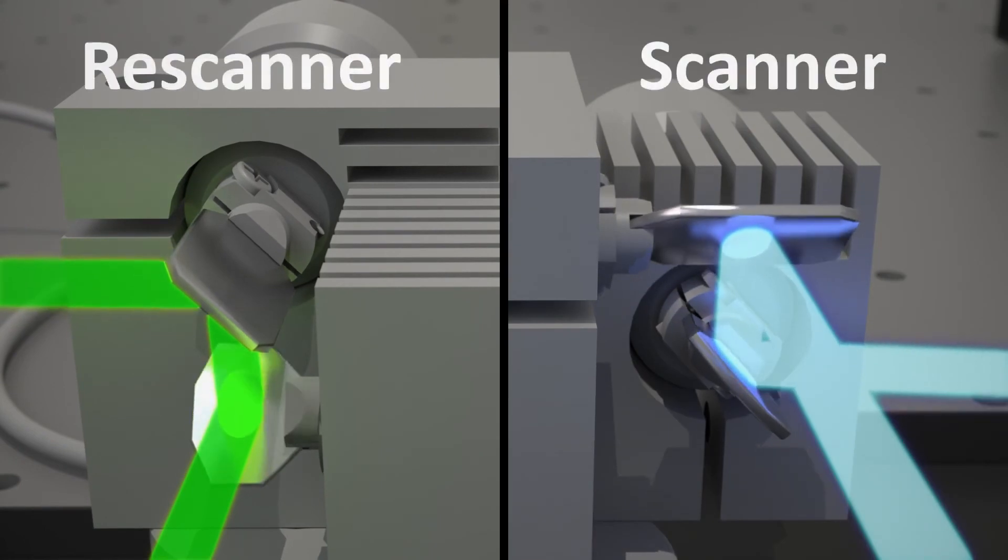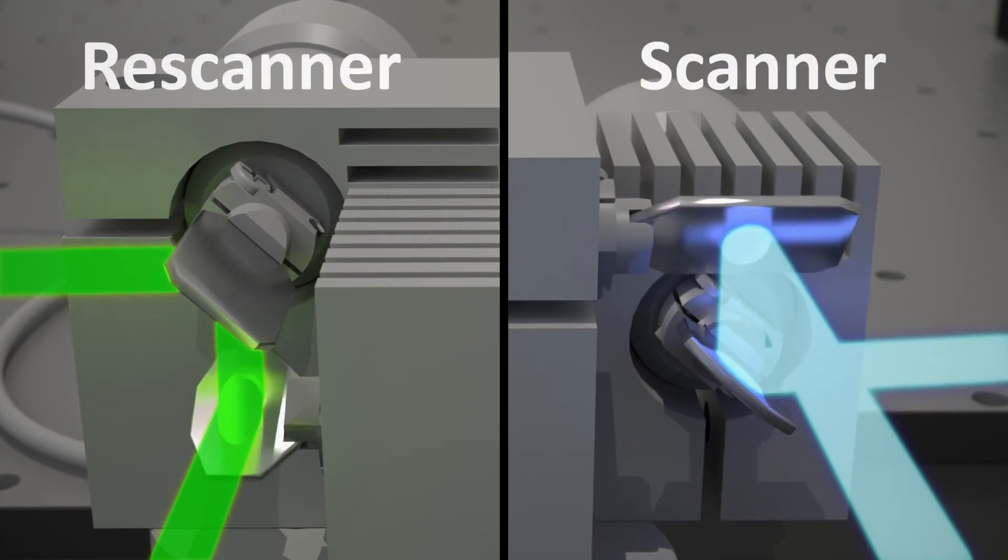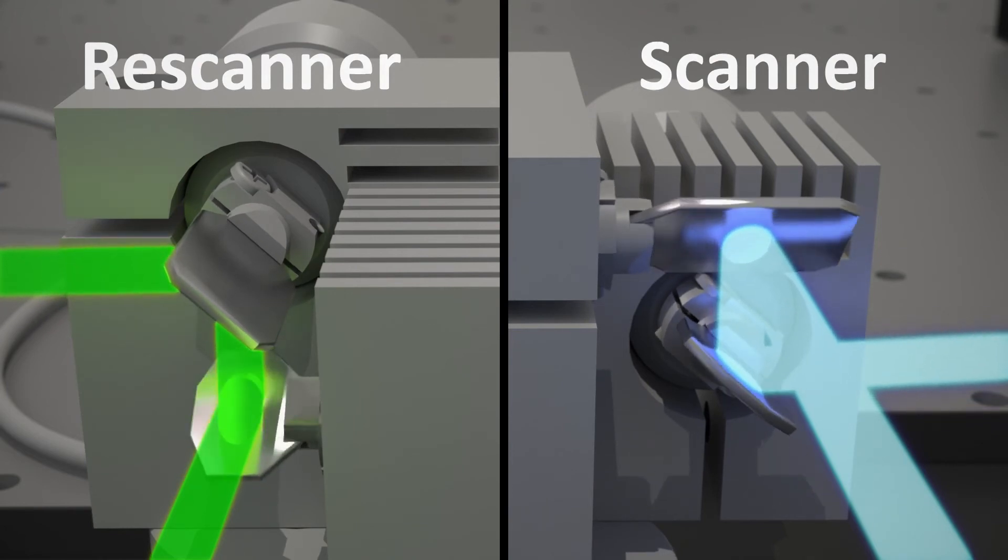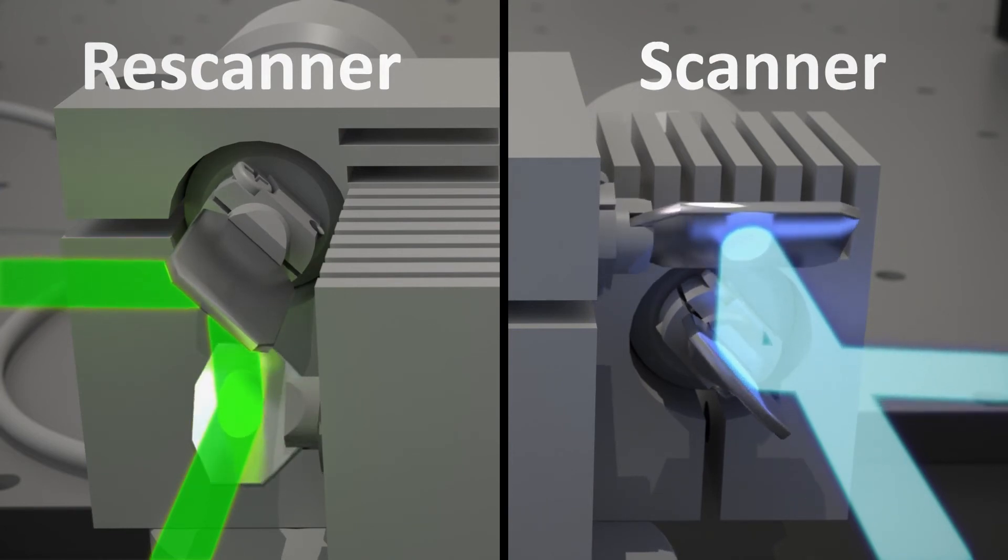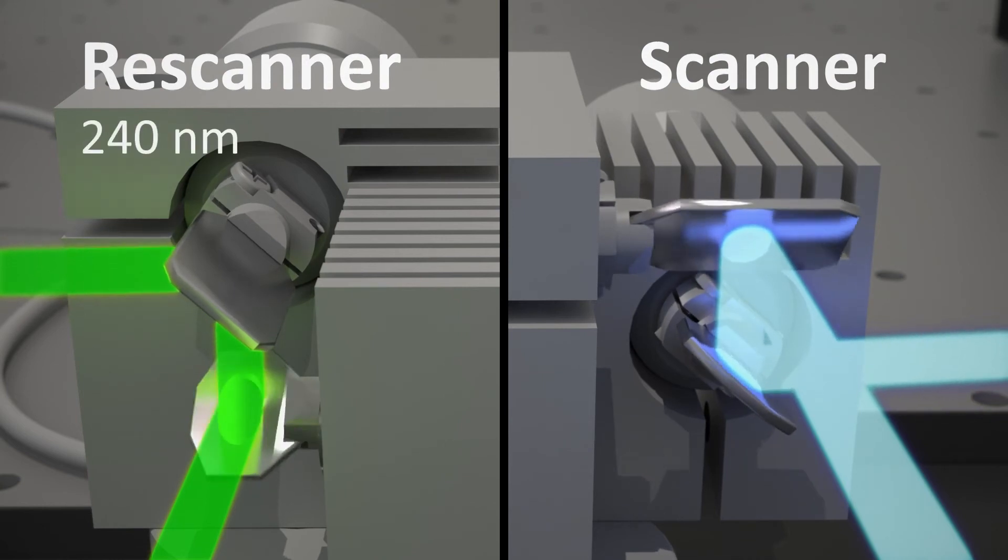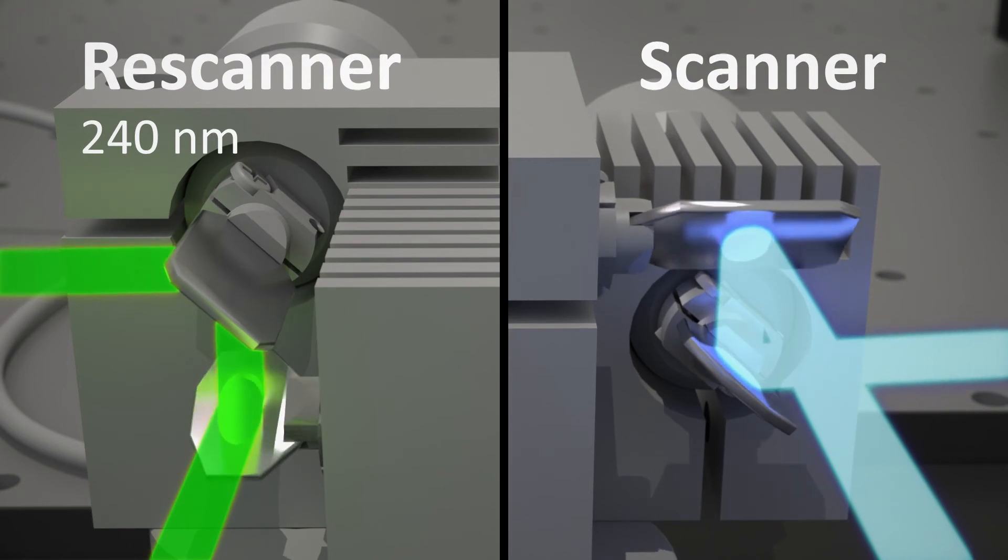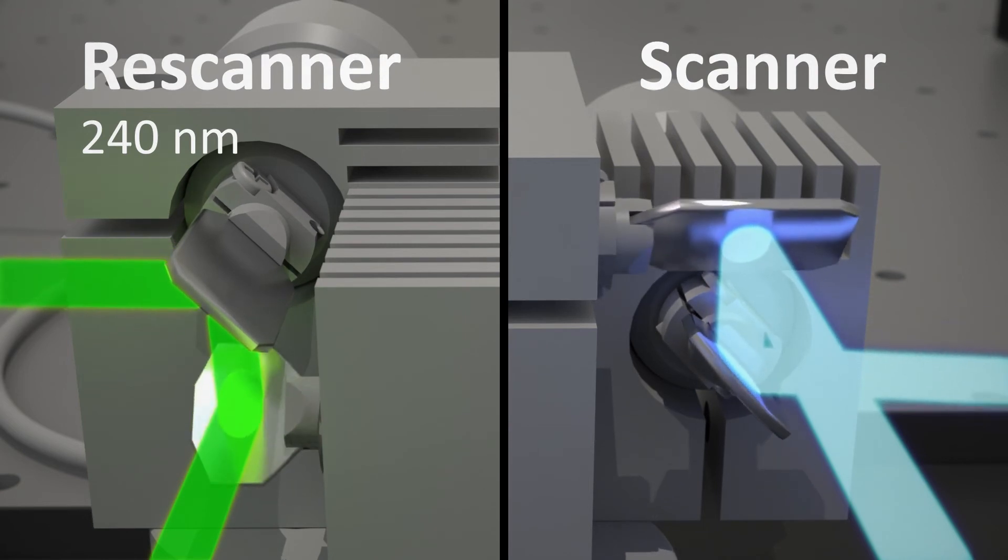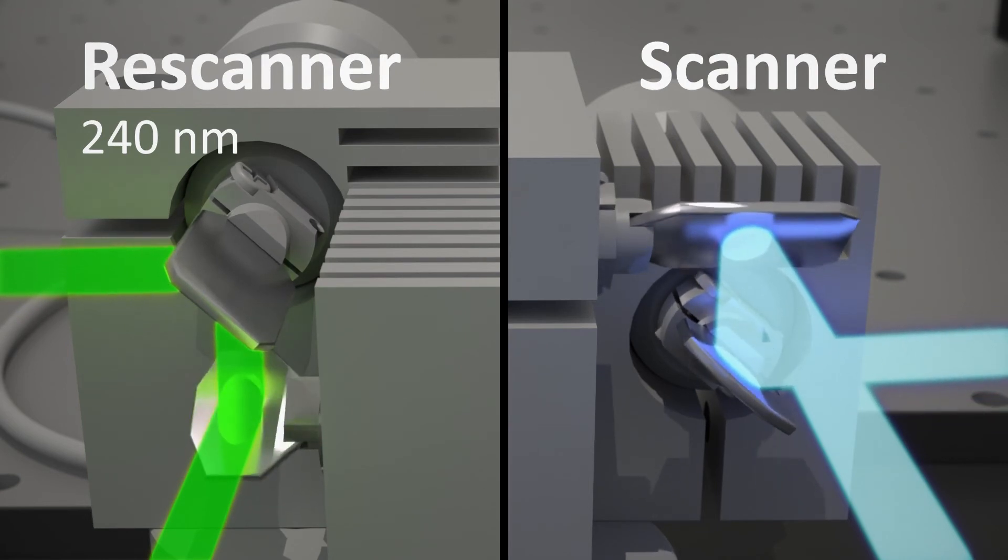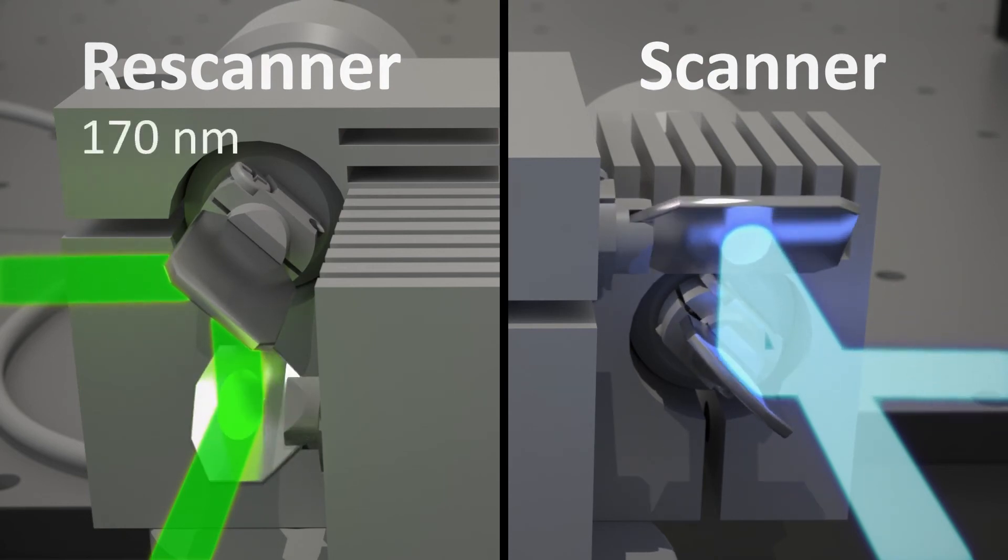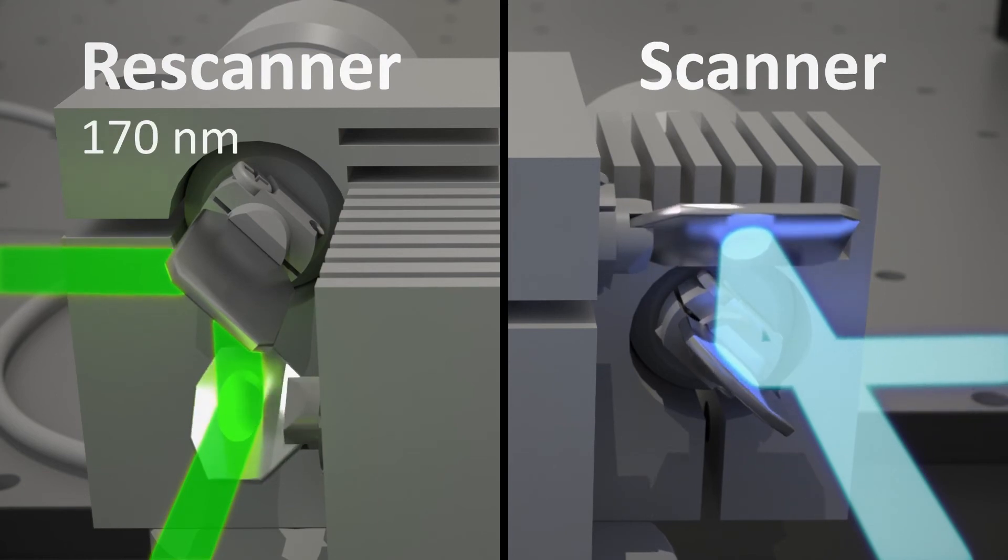When the sweep of the scanner and re-scanner are identical, the RCM is converted to a conventional confocal microscope with a diffraction-limited resolution of 240 nm. But when the sweep of the re-scanner is doubled, the RCM is converted to a confocal microscope with improved lateral resolution. The result is a resolution of 170 nm.